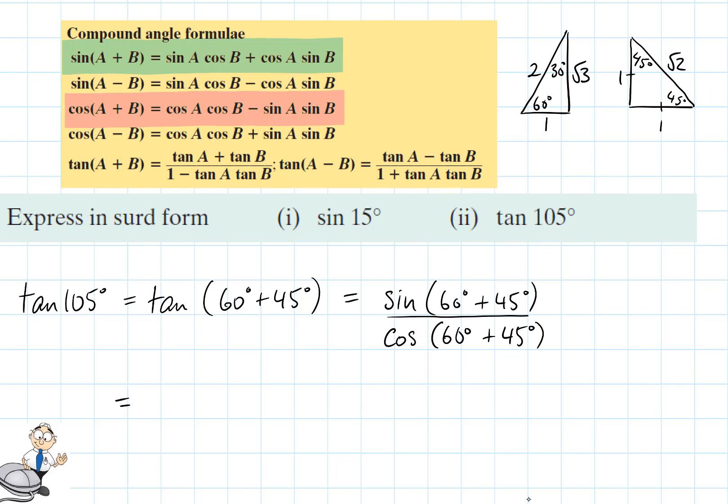So our numerator would be sine A cos B plus cos A sine B. So that's sine 60 cos 45 plus cos 60 sine 45 degrees. And this has been divided by cos A cos B take away sin A sine B, so that's cos 60 degrees cos 45 degrees take away sin 60 degrees sin 45 degrees.